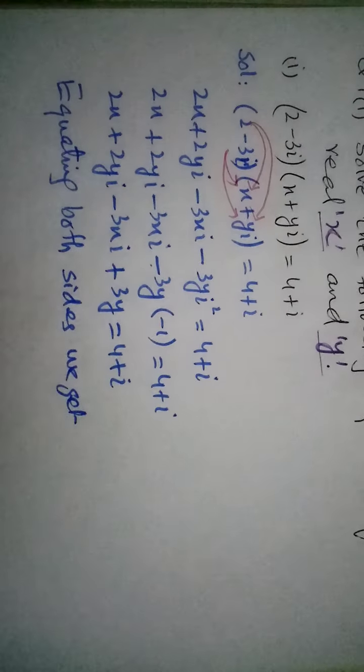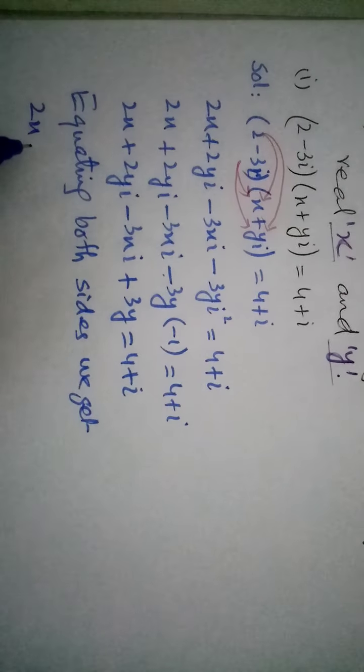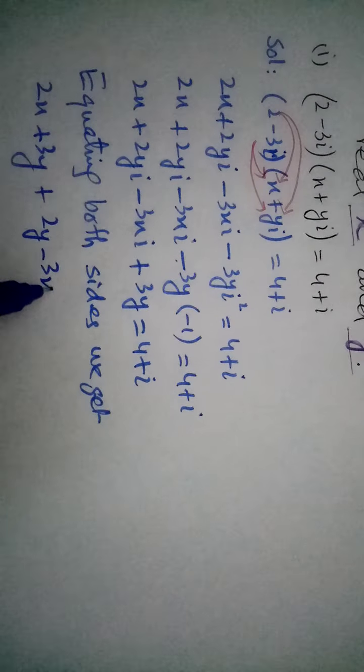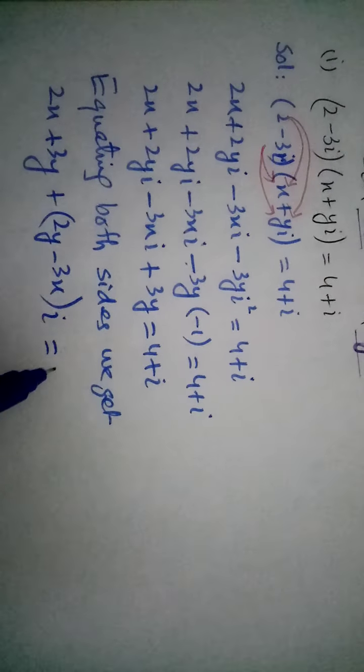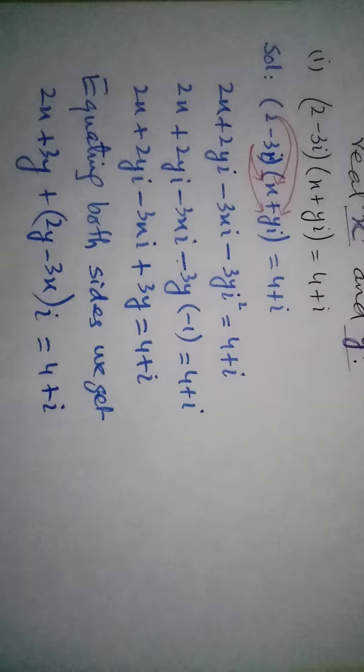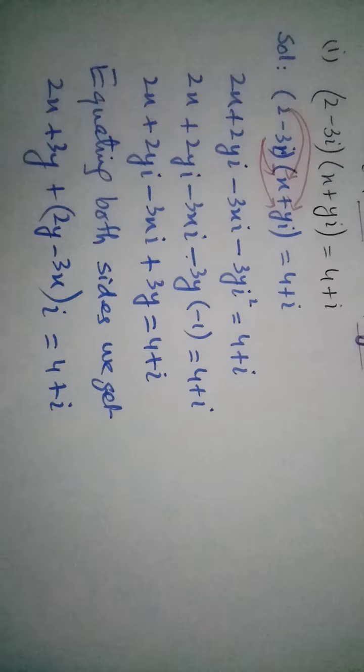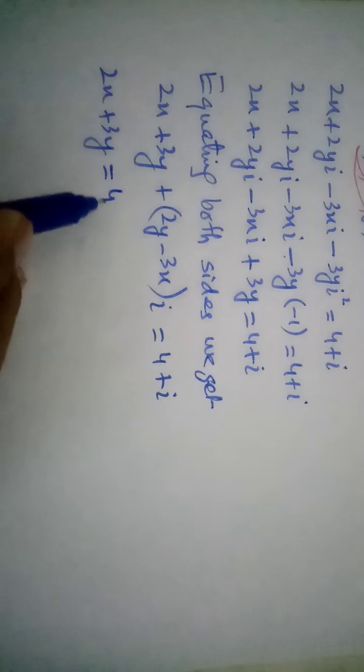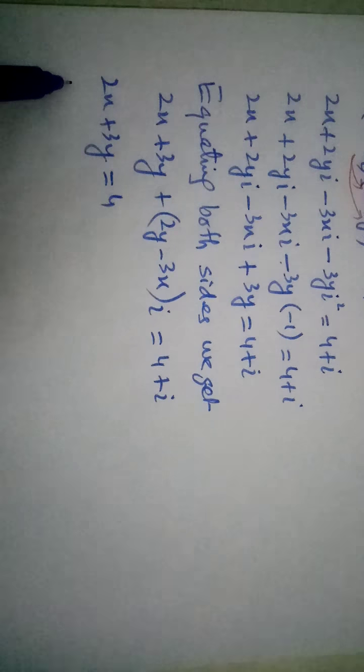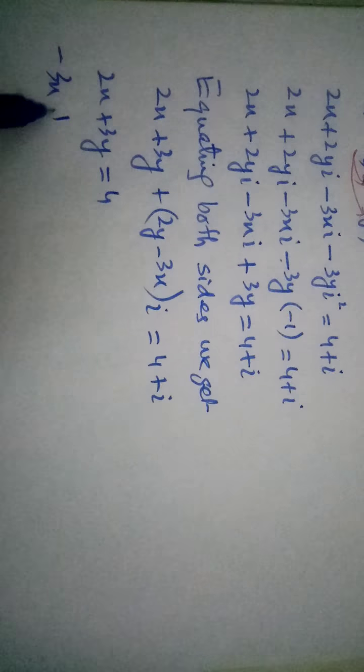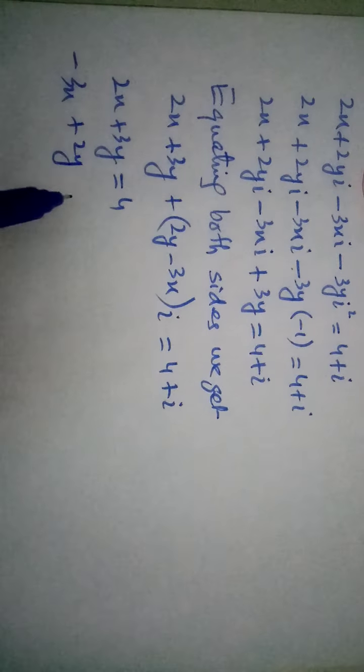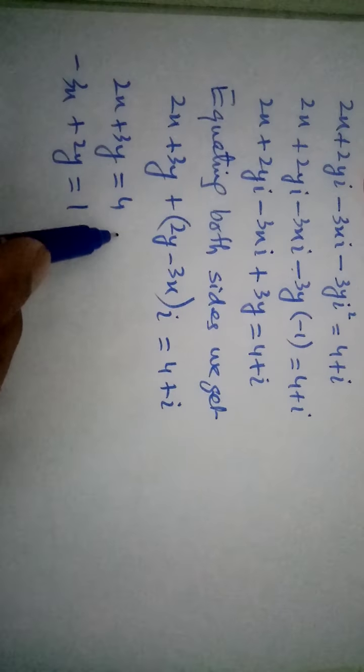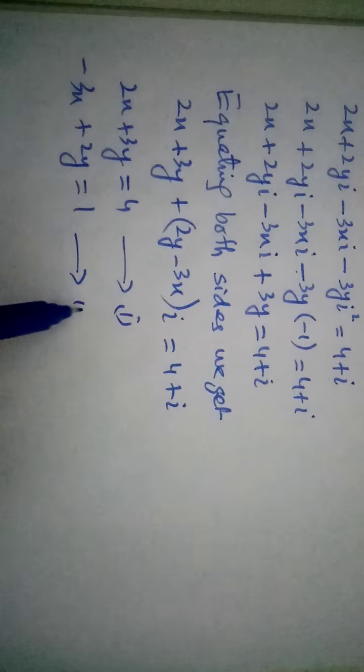Equating both sides we get 2x plus 3y plus 2y minus 3x iota, iota common le liya, and 4 plus iota. Ab kya kiya? 2x plus 3y is equal to 4, and then minus 3x plus 2y is equal to 1. Iota cancel by this iota. Isko naam de diya equation 1 or isko naam de diya equation 2.